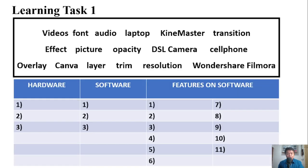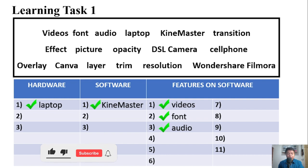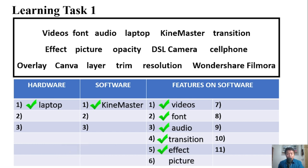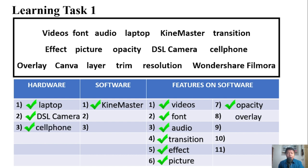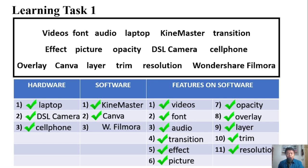Here are the answers. Videos — features. Font — feature. Audio — feature. Laptop — hardware. KineMaster — software. Transition — feature. Effect — feature. Picture — feature. Opacity — feature. DSLR camera — hardware. Cell phone — hardware. Overlay — feature. Canvas — software. Layer — feature. Frame — feature. Resolution — feature. Wondershare Filmora — software.